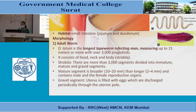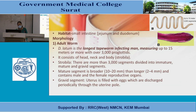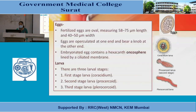Morphology — adult worm: D. latum is the largest tapeworm infecting man, measuring up to 15 meters with over 3000 proglottids. It consists of a head, neck, and strobila with more than 3000 segments divided into immature, mature, and gravid segments. The mature segment is broader than long and contains male and female reproductive organs. Gravid segment uterus is filled with eggs. Fertilized eggs are oval, measuring 58–75 micrometers in length and 40–50 micrometers in width, operculated at one end. Embryonated eggs contain a hexacanth oncosphere lined by a ciliated membrane.